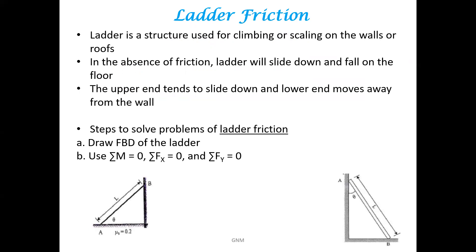Ladder is a structure used for climbing or scaling on walls or roofs. In the absence of friction, the ladder will slide down and fall on the floor. The upper end of a ladder tends to slide down and the lower end moves away from the wall. Steps to solve problems of ladder friction are: first, draw the FBD of the given ladder and then use equations of equilibrium — summation of moment about any point equals zero, summation FX equals zero, and summation FY equals zero — for finding out unknowns.